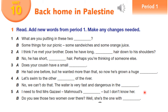Okay, let's start. Question one: 'What are you putting in these two ___?' Answer: Some things for our picnic — some sandwiches and some orange juice.